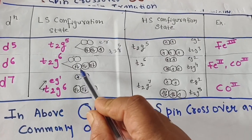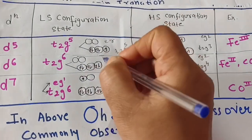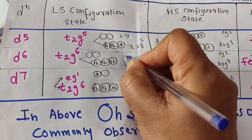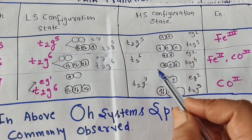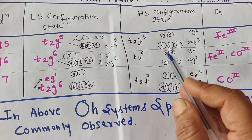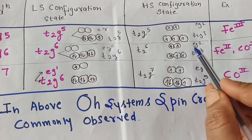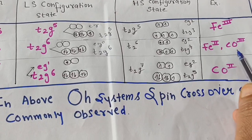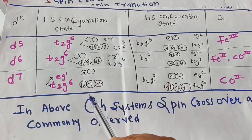For d6 configuration in low spin, all six electrons fill t2g (t2g⁶, eg⁰). In the high spin state, electrons distribute as t2g⁴ eg², giving more unpaired electrons. This case is seen in iron(II) and cobalt(III). For d7, in low spin all t2g are paired and eg has one electron; in high spin, three electrons are unpaired.